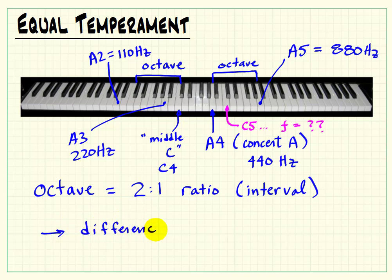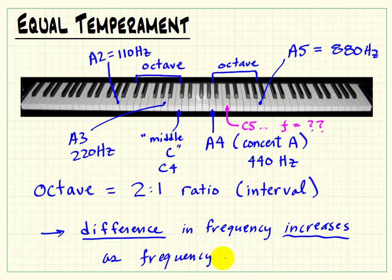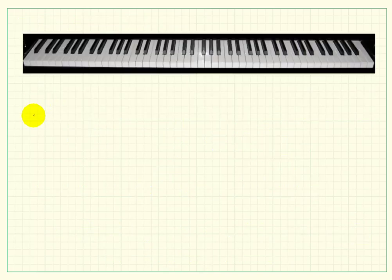If we consider the actual difference in frequencies, it looks like the difference changes pretty dramatically across the keyboard. The difference between A2 and A3 is only 110 Hertz, whereas the difference between A4 and A5 is 440 Hertz. So the actual difference in frequency increases as we go toward the right on the keyboard, where frequency is increasing.